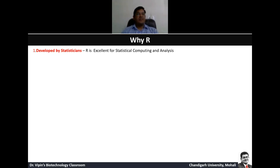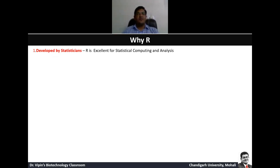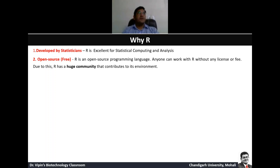R is developed by statisticians. It is excellent for statistical computing and analysis. As we move into big data analytics and biotechnology, statistics becomes centre stage. To apply statistics onto data, R is the way forward. You can also do it in Python, but R is specifically a software developed for statistical analysis, so it eases your life a lot more. Other statistical packages like MATLAB are available but are paid. In contrast, R is open source and largely free — anybody can contribute to its development, do quality control, and work without any license fee.